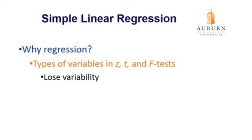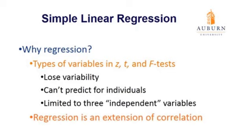We can't retain variability with Z, T, or F, but we can with correlation and with regression. In addition, we also can't predict for individuals with Z, T, and F tests, because we're using groups and the averages of groups to do our analyses. We can predict for groups, but not for individuals with those tests.